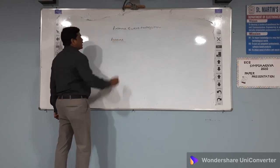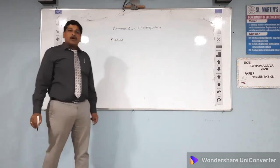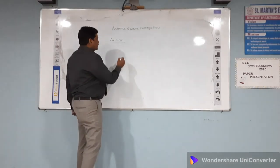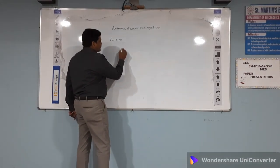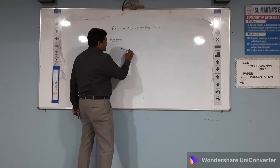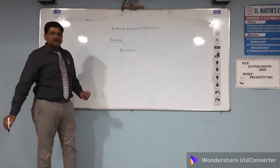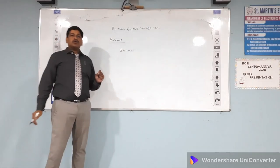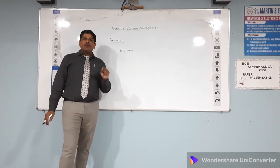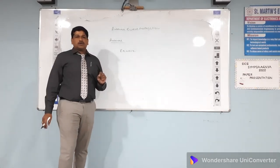before that we have to know what is meant by an electromagnetic wave. An EM wave is nothing but a wave which consists of both electric field and magnetic field components, both perpendicular to each other.